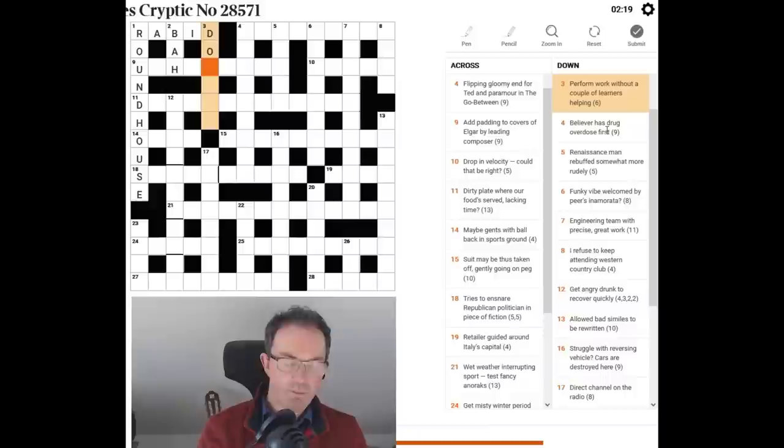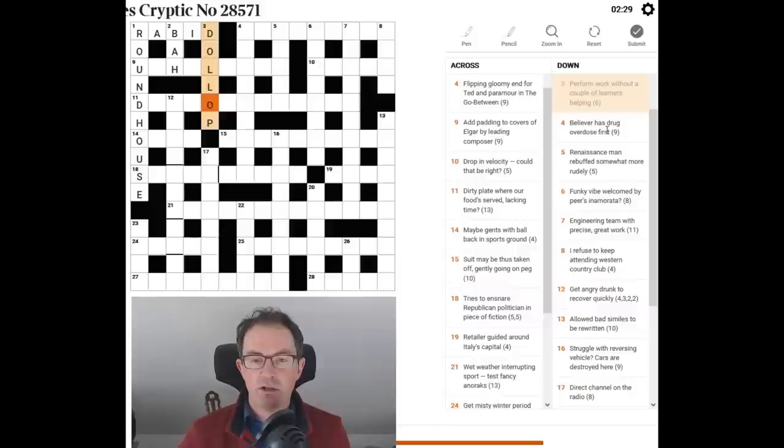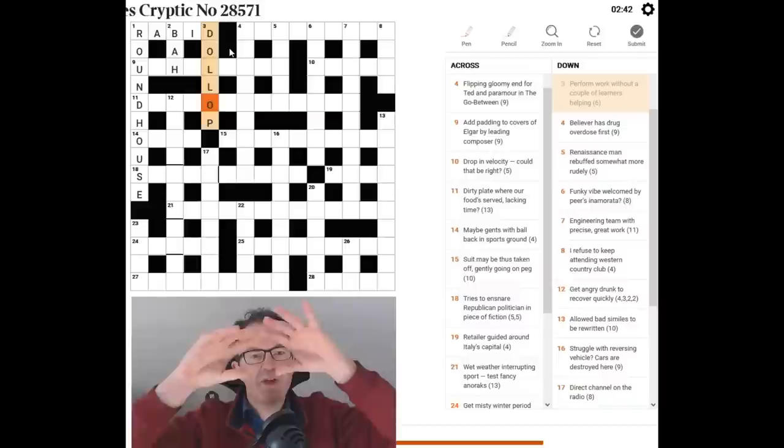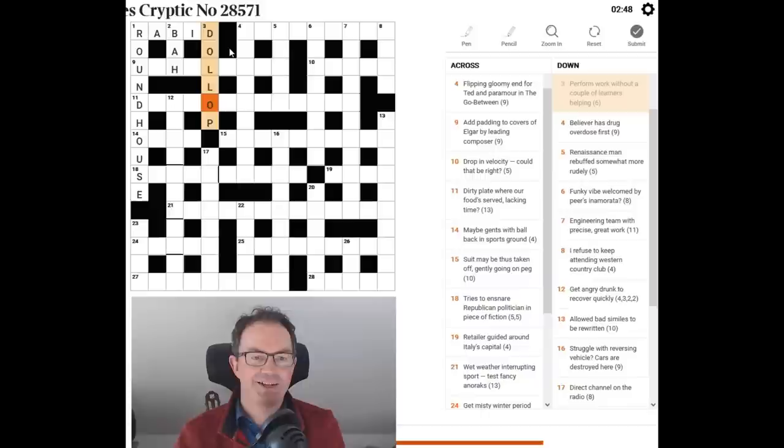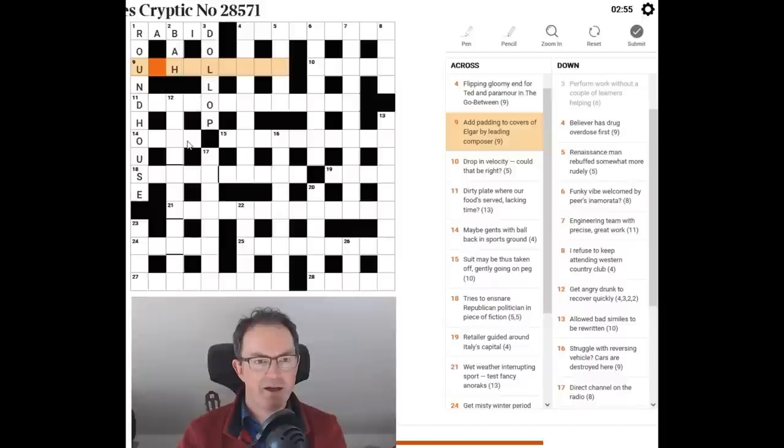Without a couple of learners. So we've got do for perform and op for work as in a musical work an opus. And then double L for a couple of learners as you might see on a car. Learner driver plates are L plates. And this word without. If you're new to cryptic crosswords you'll be thinking what on earth? Why does that mean put something on the outside of it? Well if something is without something it's surrounding it in cryptic crossword land.